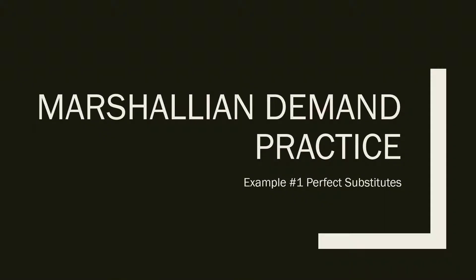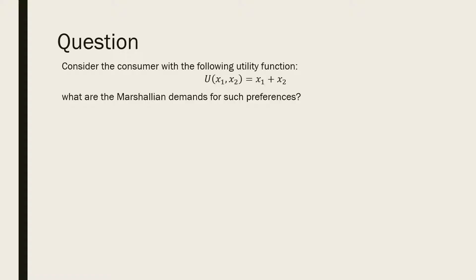What's up guys, Econ John here. In this video we're going to derive the Marshallian demands for a consumer that has perfect substitutes as their preferences. Let's go. Consider the consumer with the following utility function. What are the Marshallian demands for a consumer with such preferences?